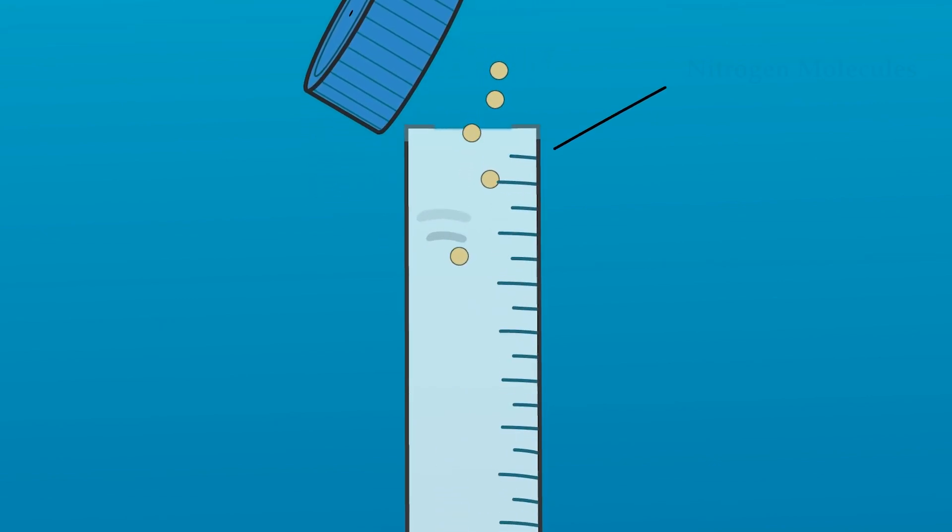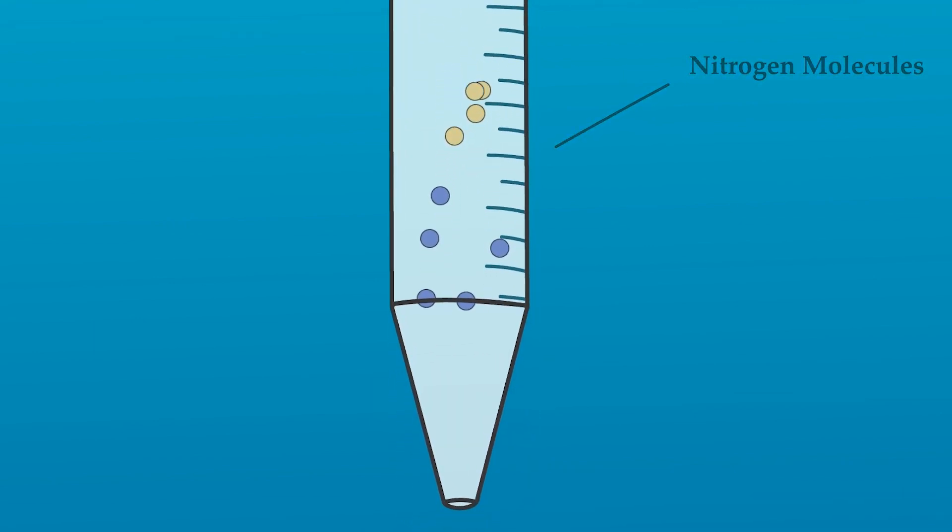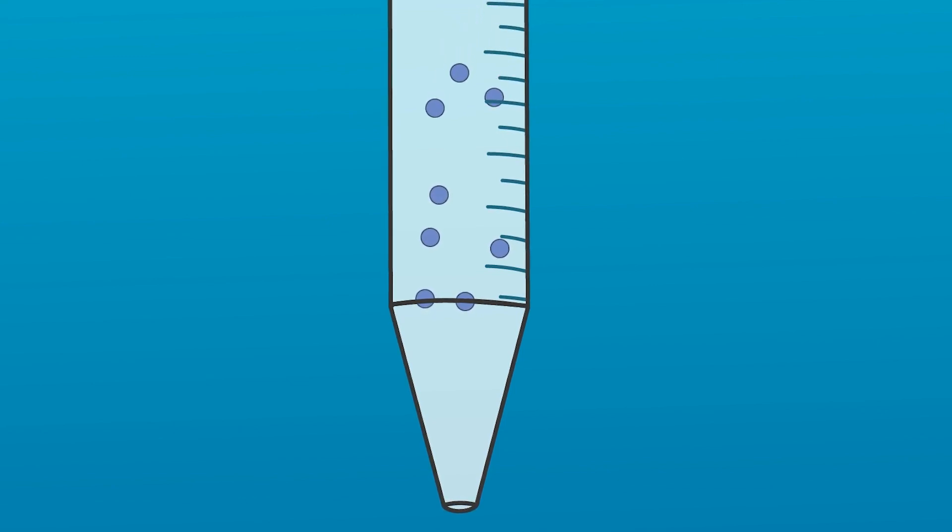By introducing a stream of nitrogen gas, this decreases the vapor pressure just above the surface of the sample. This prevents any vapor from returning back to the solvent, while allowing more vapor to dissipate.